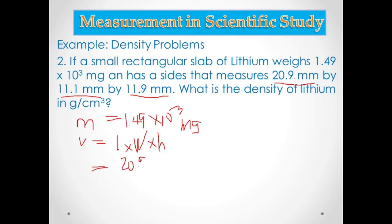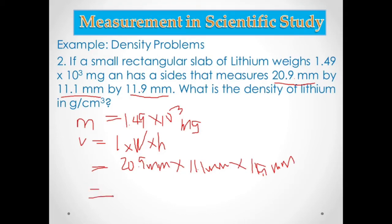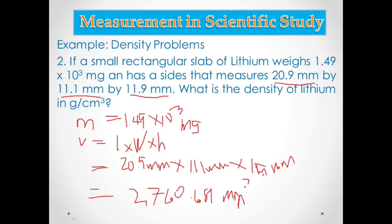So volume equals 20.9 mm × 11.1 mm × 11.9 mm. Multiplying those three dimensions gives 2,760.681 cubic mm. The unit is mm × mm × mm, which becomes cubic mm. So we now have the volume.